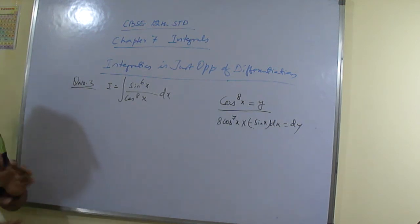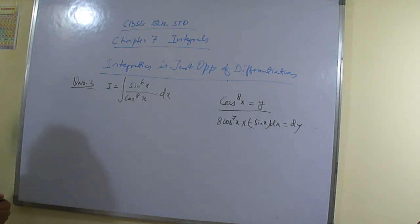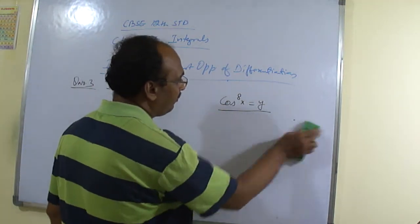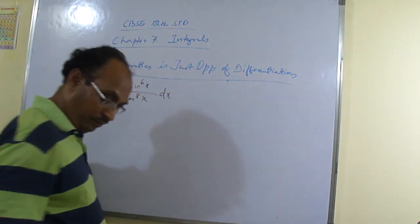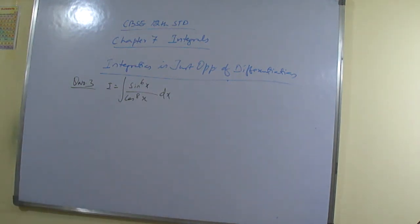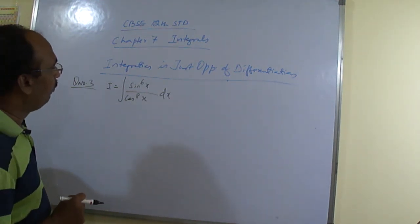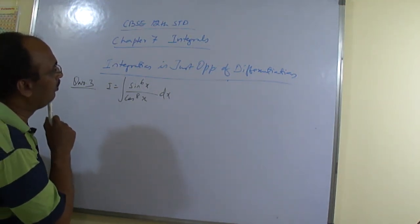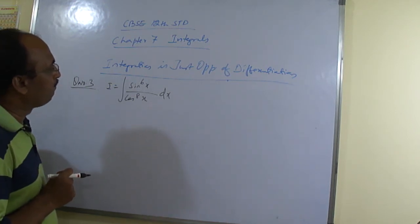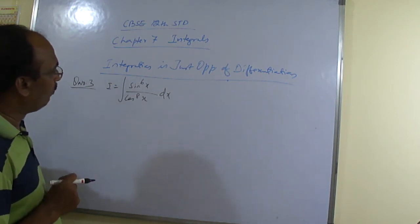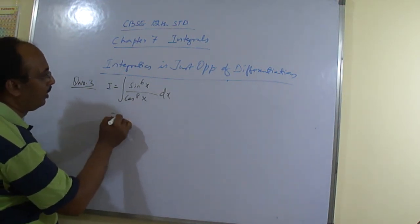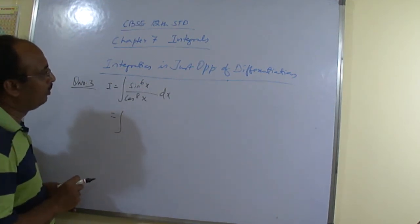So the numerator should come here — that is our main motive. This substitution will not solve our purpose. Then with cos⁸x and sin⁶x, we need to find a different approach for solving this integral with sin⁶x in the numerator.